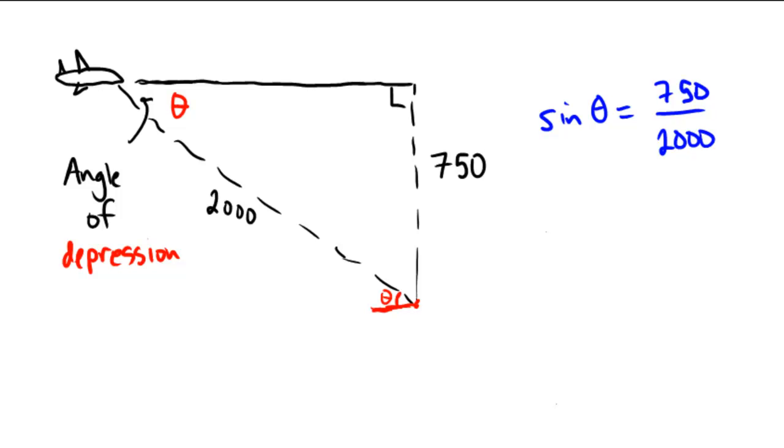Then to figure out what the angle is, we'll have to inverse the sine. So theta is equal to sine inverse of 750 over 2000.